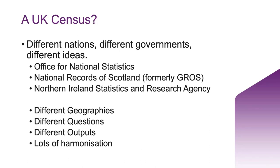There are differences in outputs from the Census as each agency responds to the needs of their nation. There is lots of harmonisation and the agencies work together to ensure enough harmonisation for cross-border analysis. For 2011 and 2001, we ourselves produced a UK Census combining the three different censuses. But for 2021–22, because of differences in questions and a time difference with the Scottish Census held a year later, that combined UK Census doesn't exist yet — there is work going on to create it.